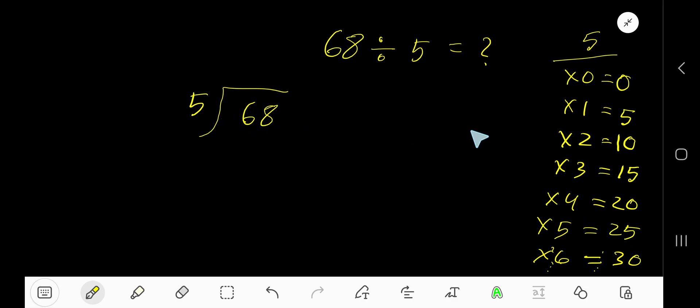5 goes into 6 how many times? Actually 2 times is 10 which is greater, so 1 time. Write 1. 1 times 5 is 5. Subtract 1. Bring down this 8.